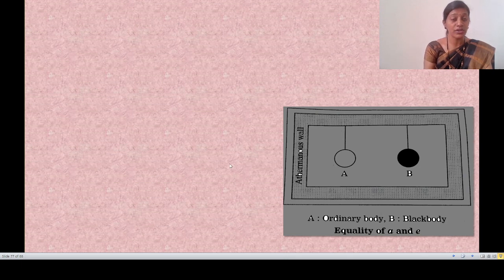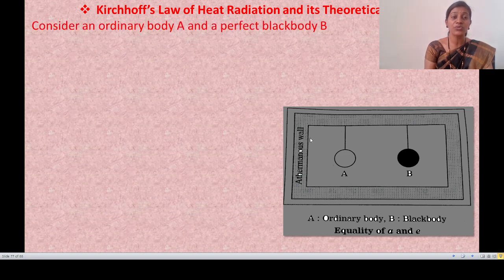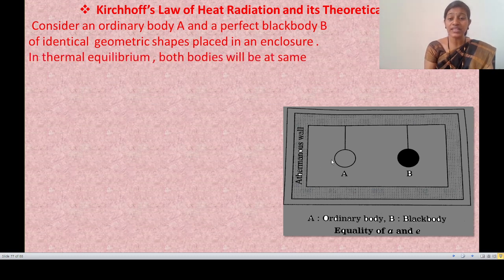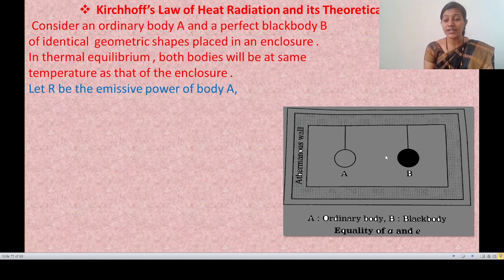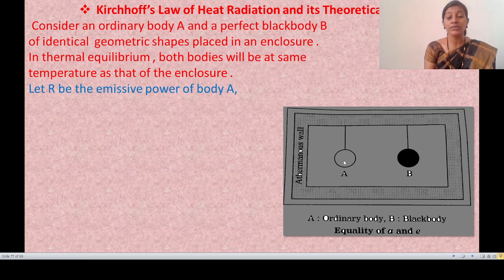Now we go to the theoretical proof. From the diagram we consider two bodies: A is an ordinary body and B is a perfectly black body. These two bodies are identical in geometrical shape, both with unit area, placed in an enclosure with a thermally insulated wall. In thermal equilibrium, both bodies are at the same temperature as the enclosure.